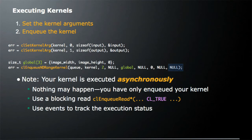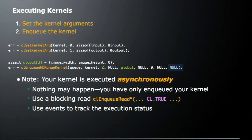Then we actually execute it. Since we're processing images, our n-dimensional domain will be 2D — global size is set to image width and image height. We use clEnqueueNDRangeKernel to enqueue the work. The first argument is the queue, the second is the kernel, the third is the work dimension (2 for 2D), followed by the global offset (not used here), then the global size — the width and height of the image we're processing. The remaining arguments are defaults; we'll discuss events later when we cover those last arguments.